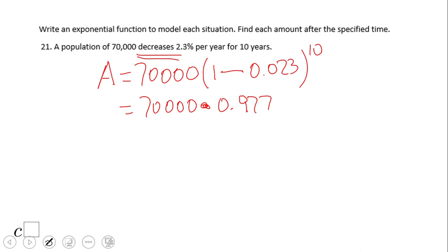0.977 to the 10 power. In other words, the population here is 97% left after each year, so it's going down. So let's see how much this is. I'm going to raise to the 10 power and we're going to multiply by 70,000.